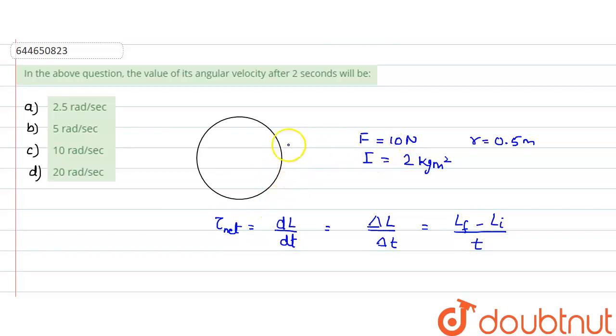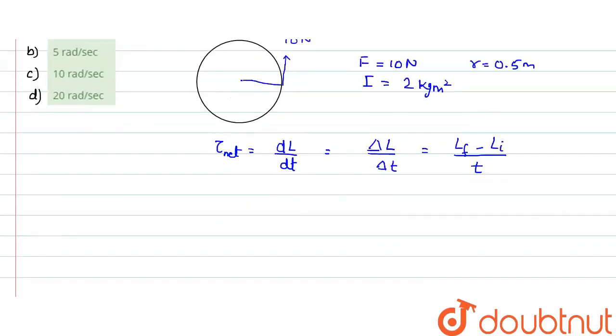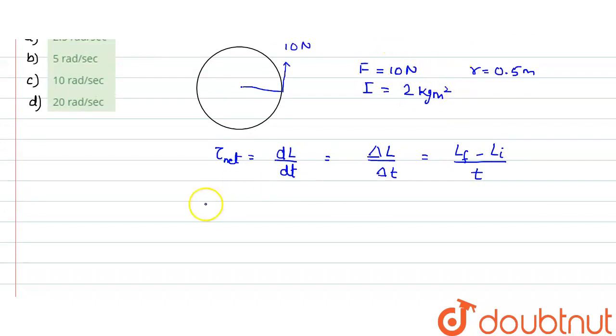If the force is applied tangentially on the surface, what would be the value of the torque? We know that torque is basically force multiplied by the perpendicular distance. The perpendicular distance would equal the radius. So the torque would be F times r.